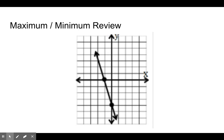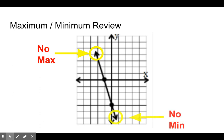We can also have a graph with arrows. In this case, we have no maximum because it goes up forever and ever. In this case, we also have no minimum because it goes down forever and ever.